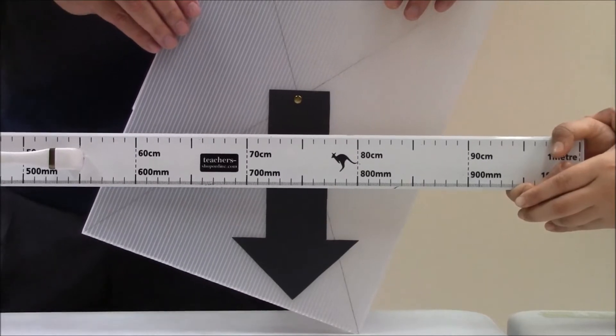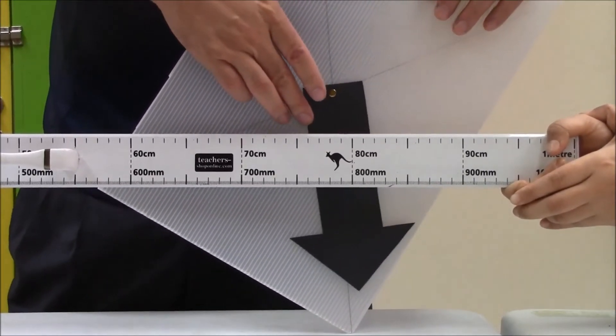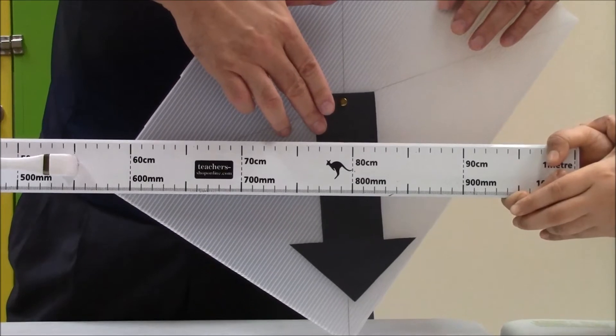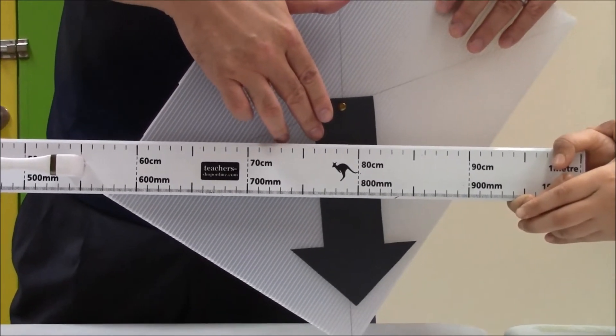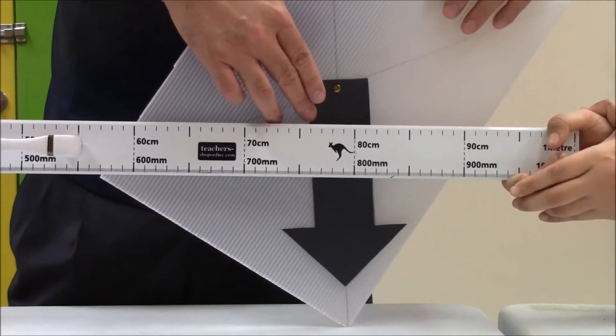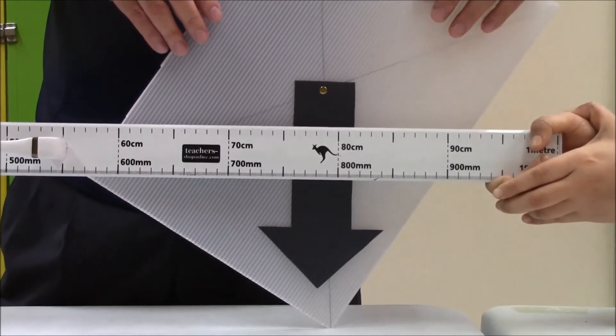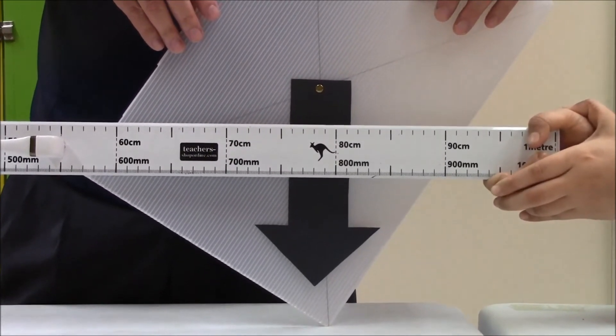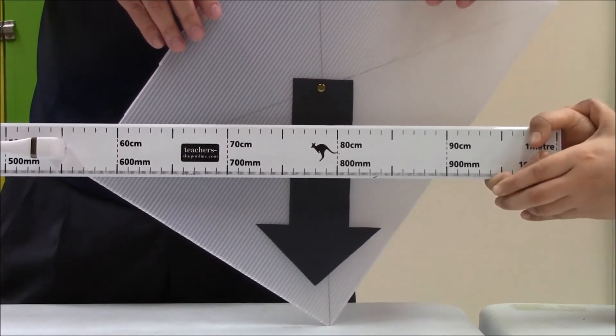Now we are going to go to the second condition where the line of weight is exactly in line with the pivot. Take note of the increase in height or any changes in height.